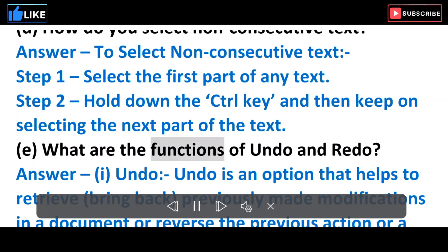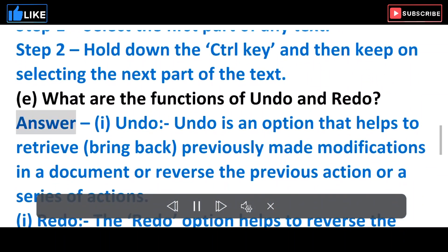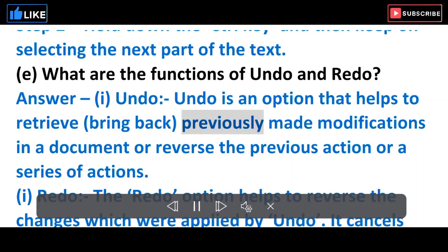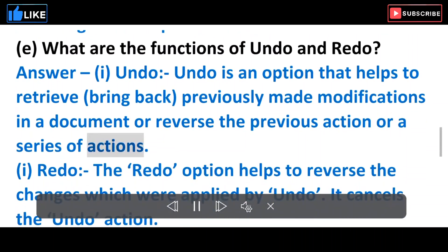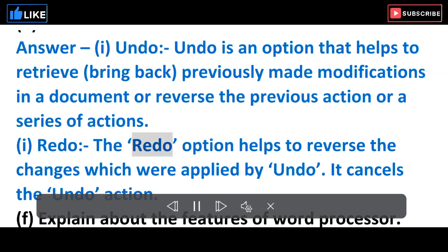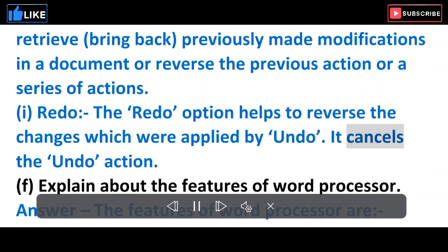E. What are the functions of undo and redo? Answer: (i) Undo - Undo is an option that helps to retrieve, bring back, previously made modifications in a document or reverse the previous action or a series of actions. (ii) Redo - The redo option helps to reverse the changes which were applied by undo. It cancels the undo action.